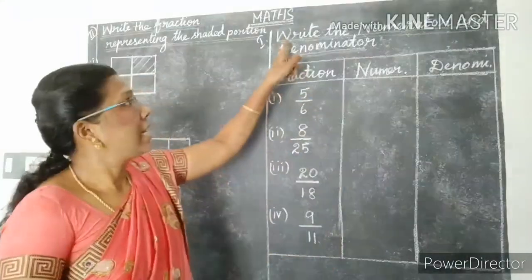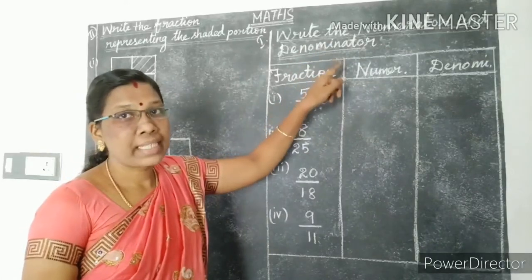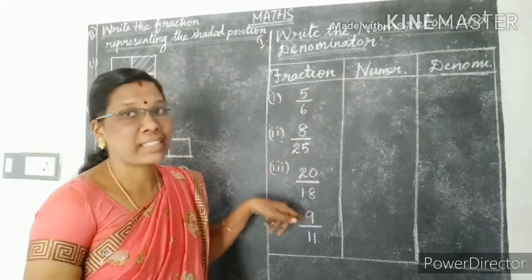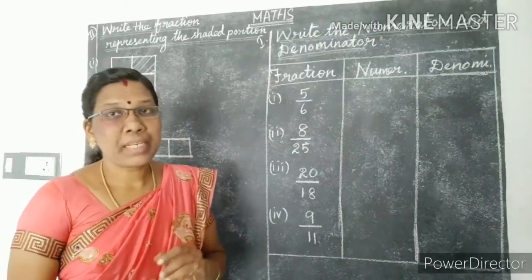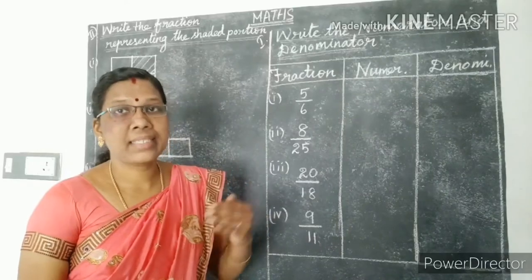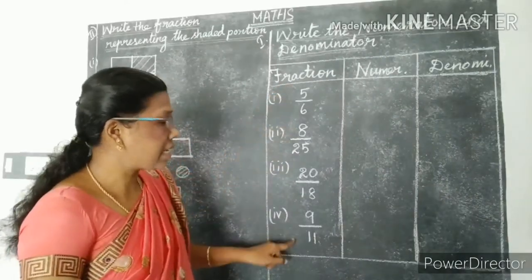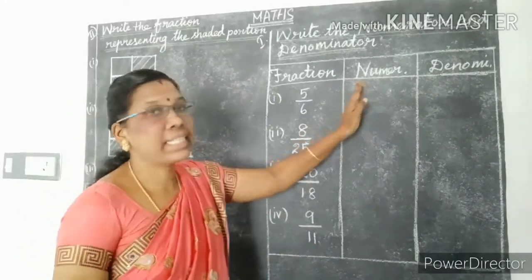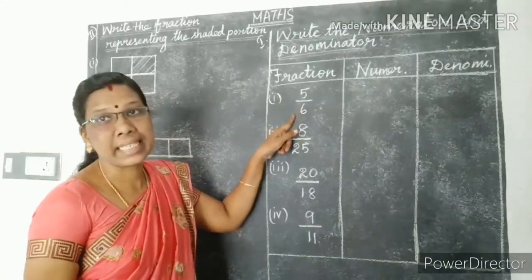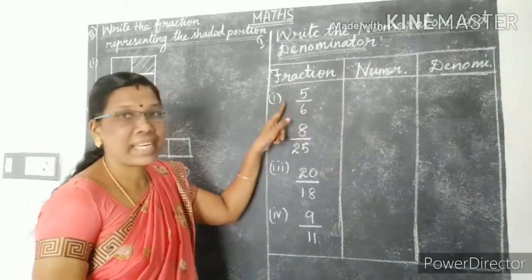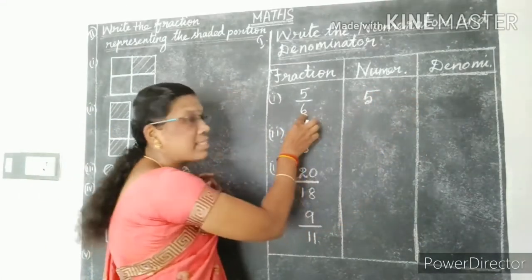Next, write the numerator and denominator of the following fractions. We already know what is numerator and denominator. Numerator means upper part of the fraction. Denominator is lower part of the fraction. Some fractions are given. We need to write the numerator and denominator. See the first fraction: five divided by six. What is numerator here? Five.